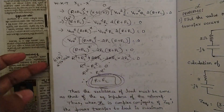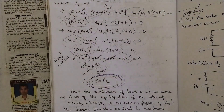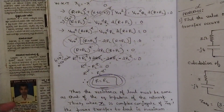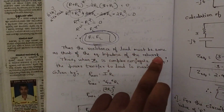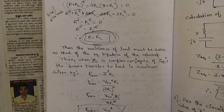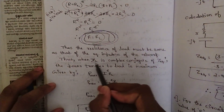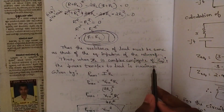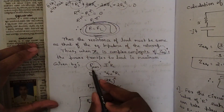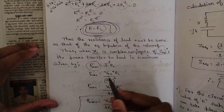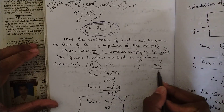This proves R equals R_L, which is exactly what the theorem required. Thus, the resistance of the load must be the same as that of the equivalent impedance of the network — this is the Maximum Power Transfer condition. When Z_L is the complex conjugate of Z_equivalent, maximum power is transferred. P_max equals I squared R_L, substituting I as V_th over 2R_L: P_max equals V_th squared divided by (2R_L) squared times R_L.